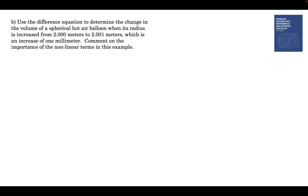If we're increasing the radius from 2.000 meters to 2.001 meters, what's the change in volume? What's the difference in volume? So we have the difference equation. The r is 2 meters. The delta r is 0.001 meters.